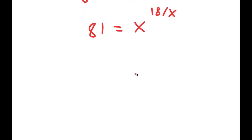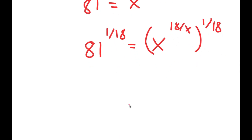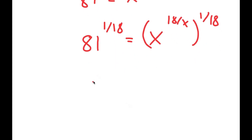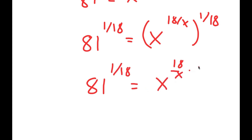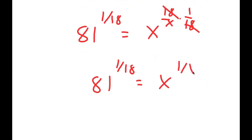Now I'm going to take the power of 1 over 18 on both sides. So I get 81 to the power of 1 over 18 is equal to x to the power of 18 over x to the power of 1 over 18. This is the same thing as x to the power of 18 over x times 1 over 18, and these two 18s cancel out. So I get 81 to the power of 1 over 18 is equal to x to the power of 1 over x.